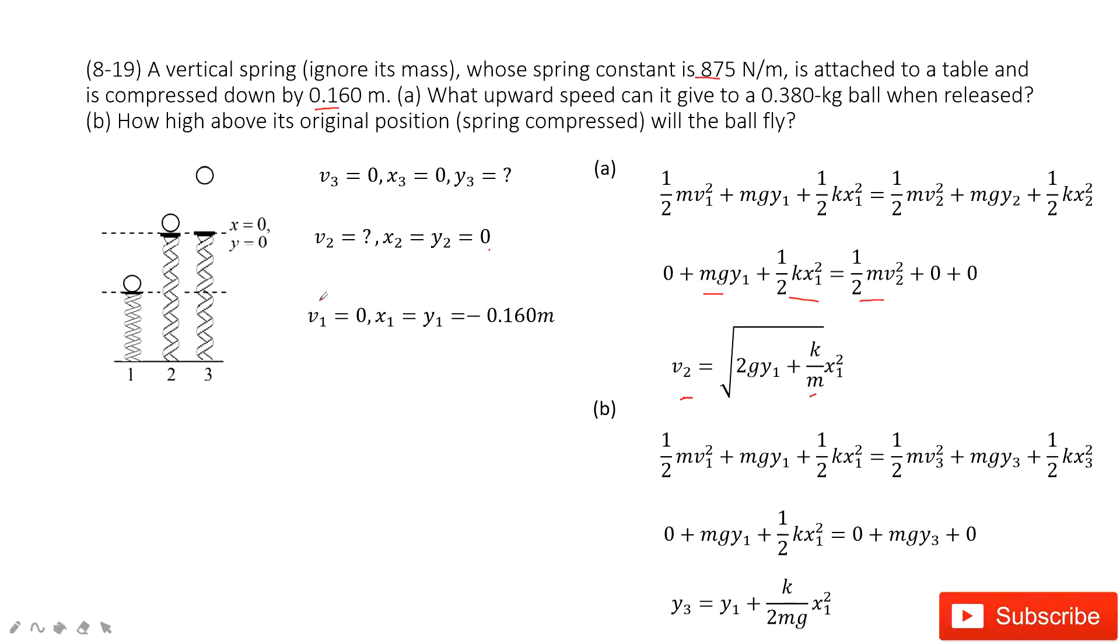So we consider the energy at position one equals the energy at position three. So that means at position one, kinetic energy plus gravity potential energy plus elastic potential energy equals the position three, the kinetic energy plus the gravity potential energy plus the elastic potential energy.